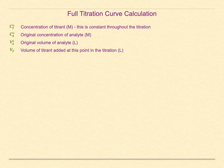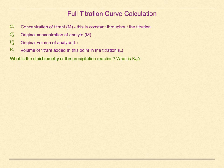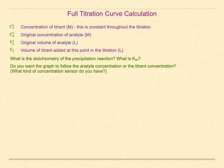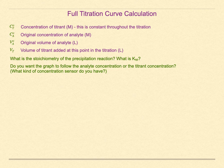At this point, you need to make two choices. First, what is the stoichiometry of the precipitation reaction? This also dictates the form of the Ksp expression, and the form of the equations will depend on the stoichiometry. Second, do you want to follow the analyte concentration — which will be decreasing — or the titrant concentration — which will be increasing? In practice, this means choosing what kind of sensor you would use in the actual titration. The equivalence point will be the same in both cases.